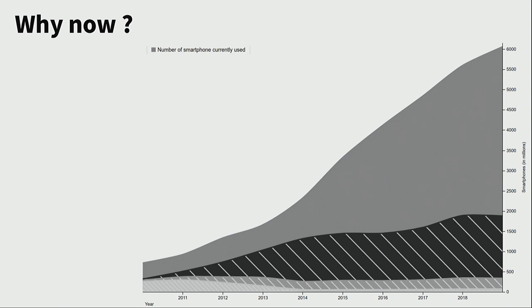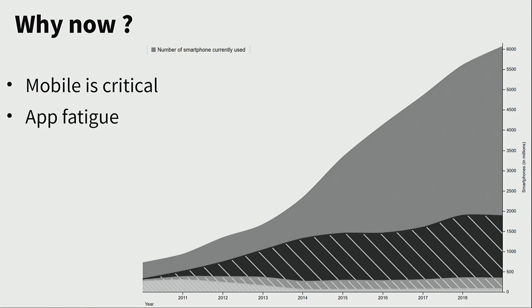So why are we talking about offline right now? You can see on the graph that's a number of mobile devices in use today and until 2019. There's going to be six billion mobile devices in the world in use in two years. So mobile is very important, and for a lot of people, mobile is the only thing they have — they don't have a desktop.